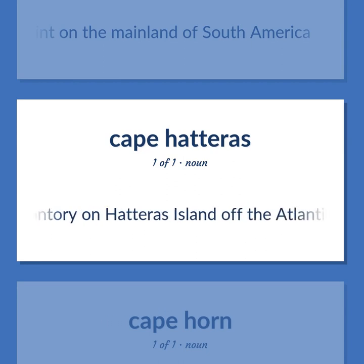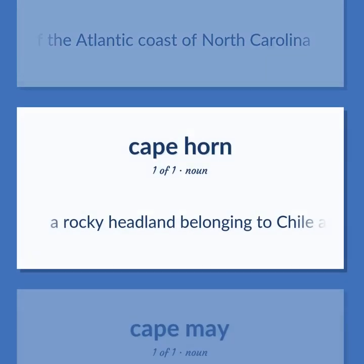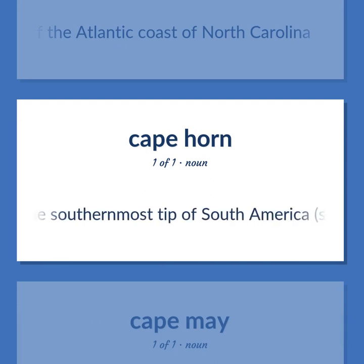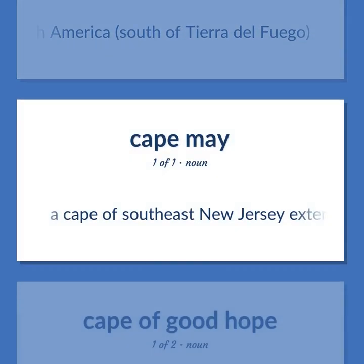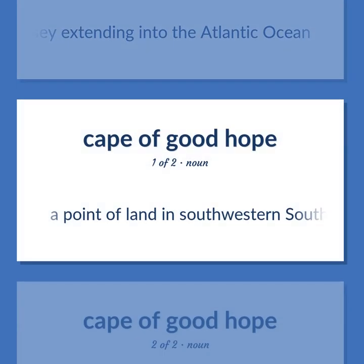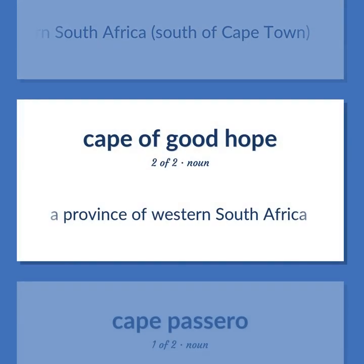A promontory on Hatteras Island off the Atlantic coast of North Carolina. A rocky headland belonging to Chile at the southernmost tip of South America, south of Tierra del Fuego. A cape of southeast New Jersey extending into the Atlantic Ocean. A point of land in southwestern South Africa, south of Cape Town. A province of western South Africa.